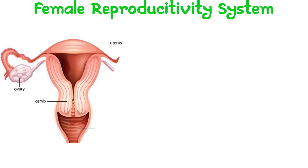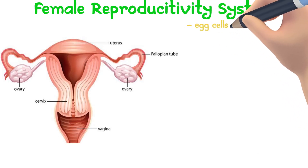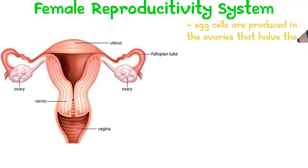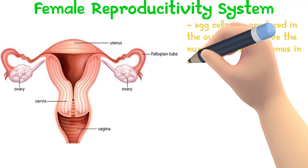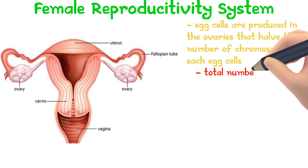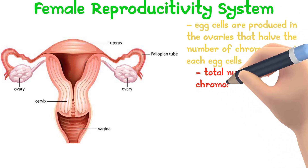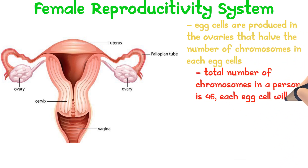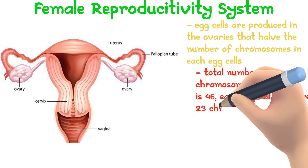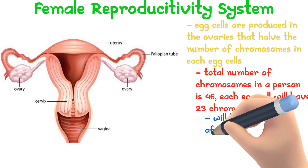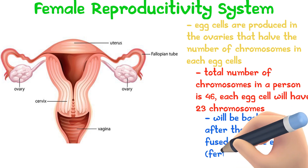This is the female reproductive system. The eggs are produced in the ovaries by cell division that halves the number of chromosomes in the nucleus of each egg cell. Since the total number of chromosomes in a person is 46, each nucleus will have 23 chromosomes. This value will be back to 46 after the sperm has fused with the egg.